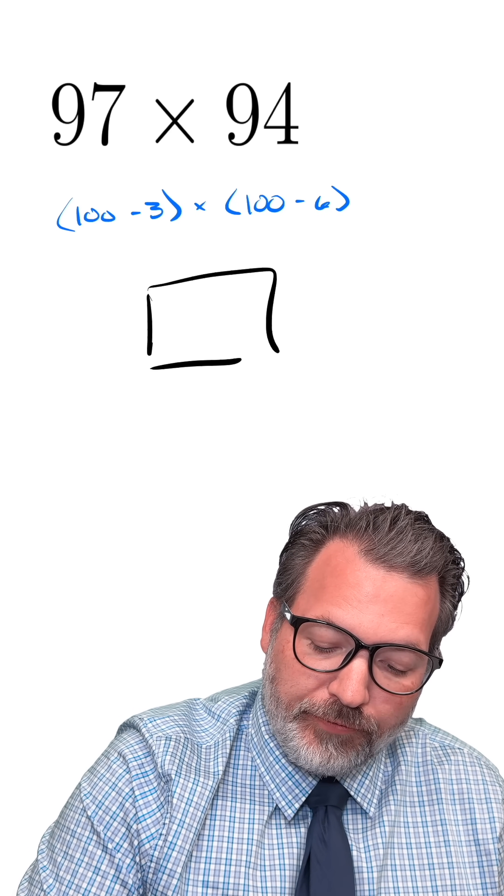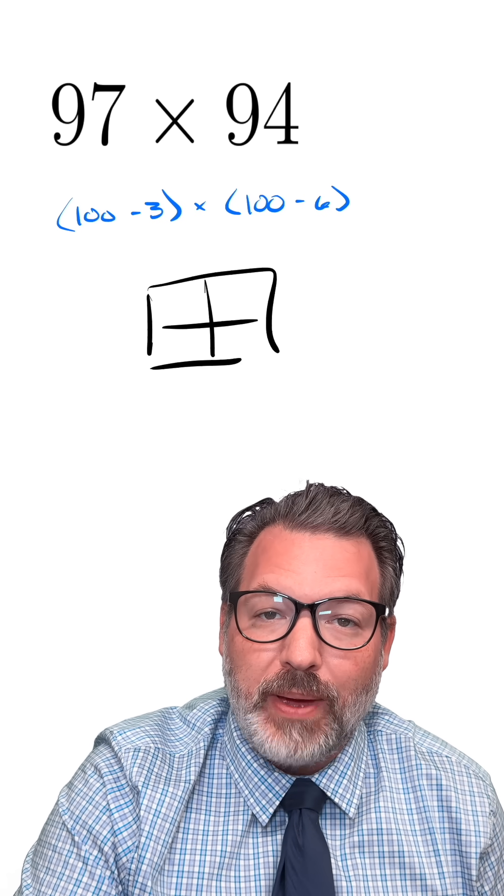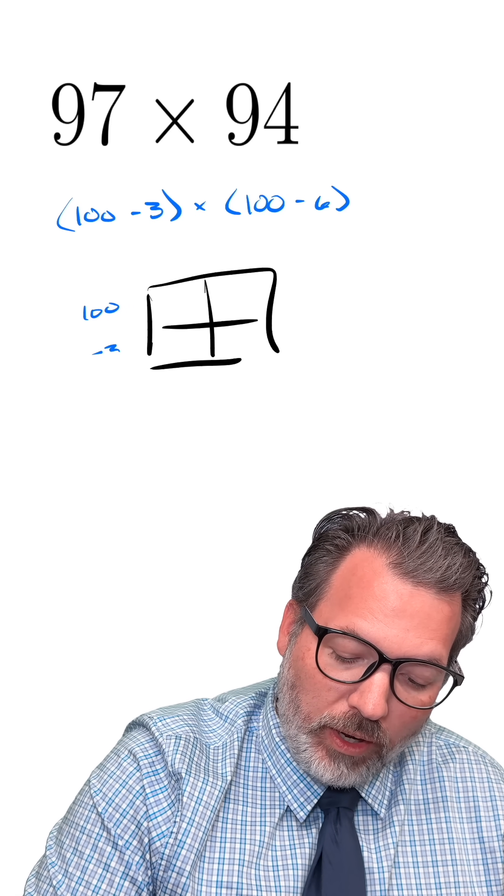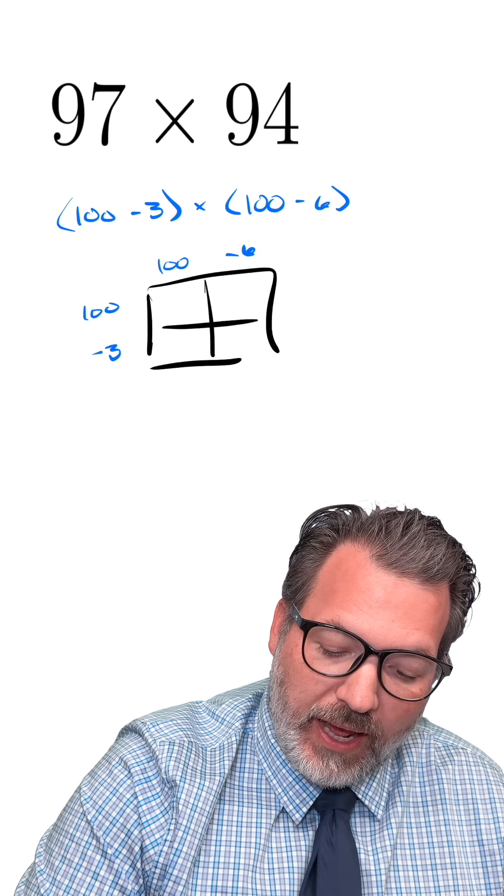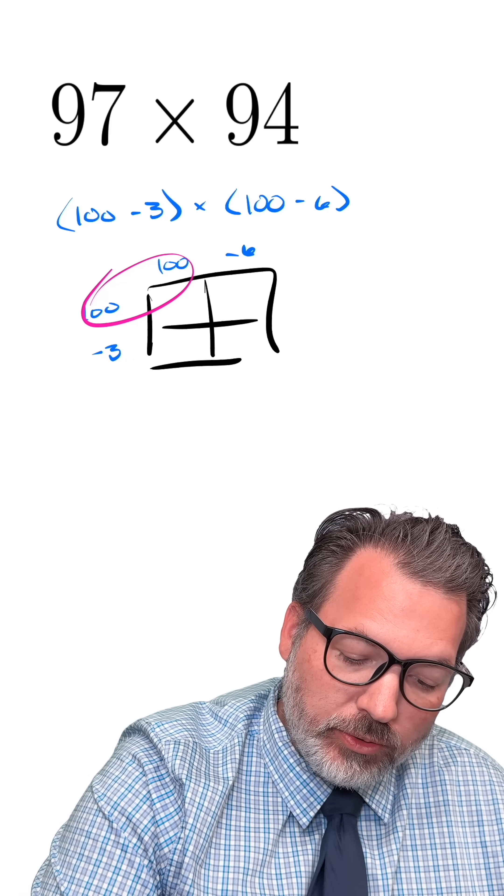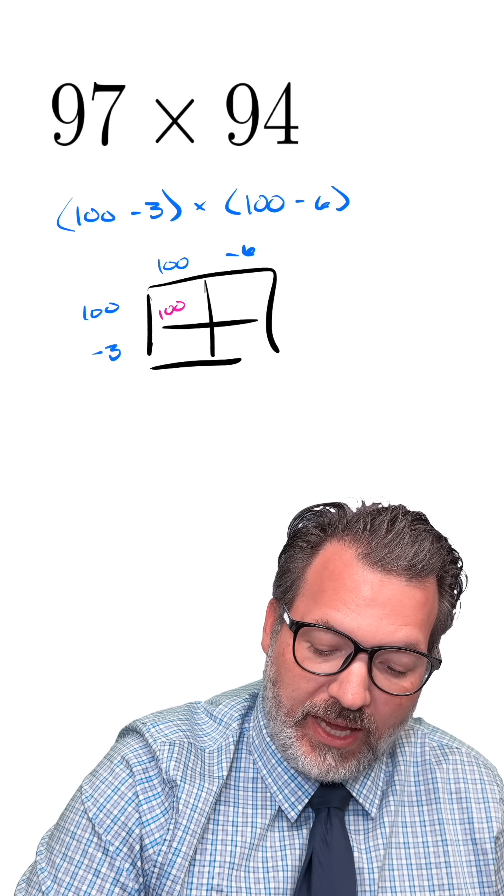And we're going to use my preferred tool for multiplying out binomials, something called the box method. We'll be multiplying the 100 minus 3 times 100 minus 6. And as we do this, we get 100 times 100 for this upper left-hand corner, which of course is 10,000.